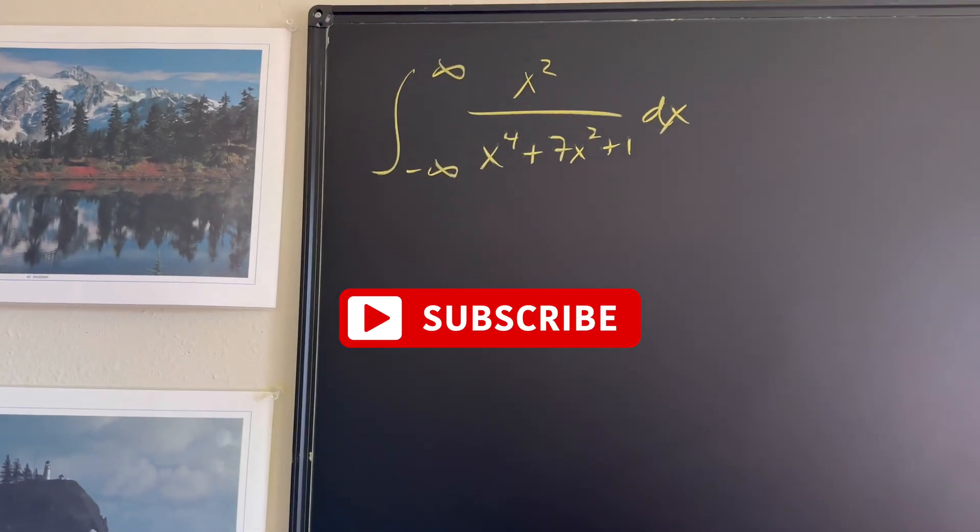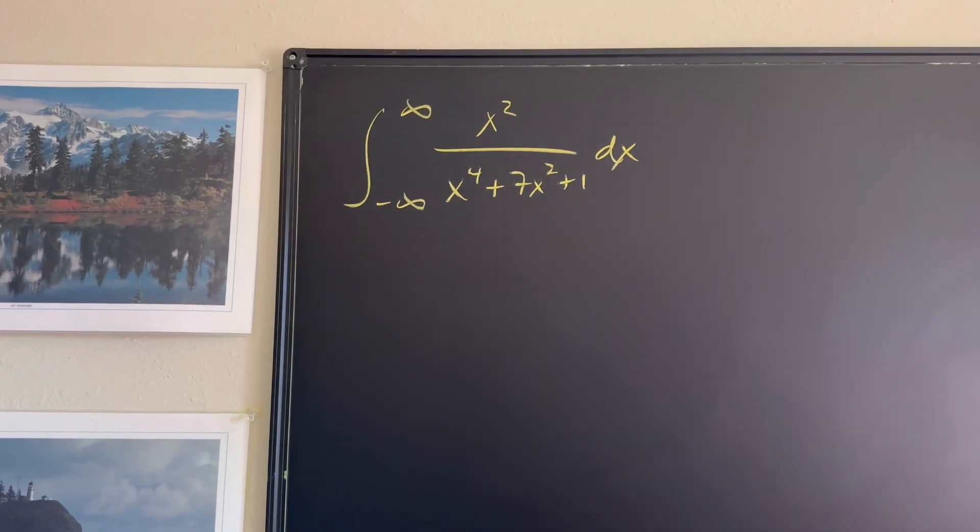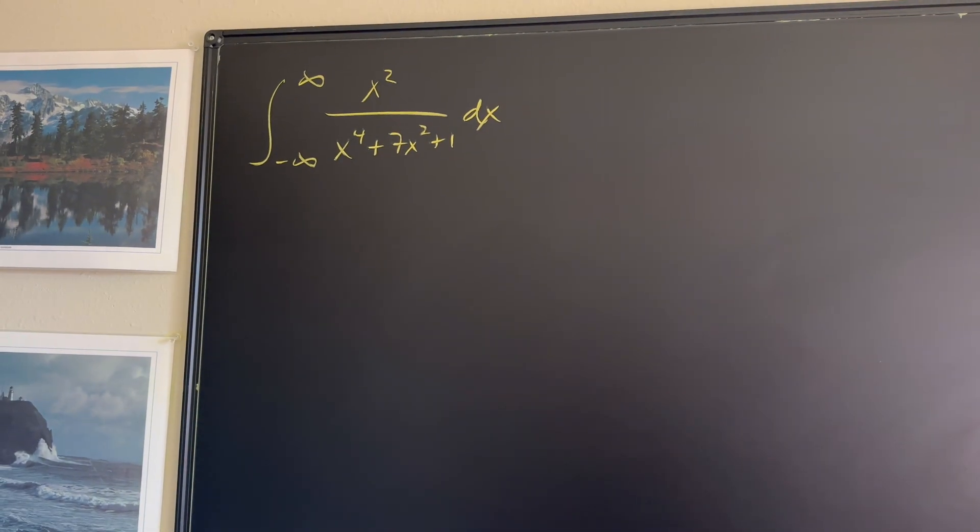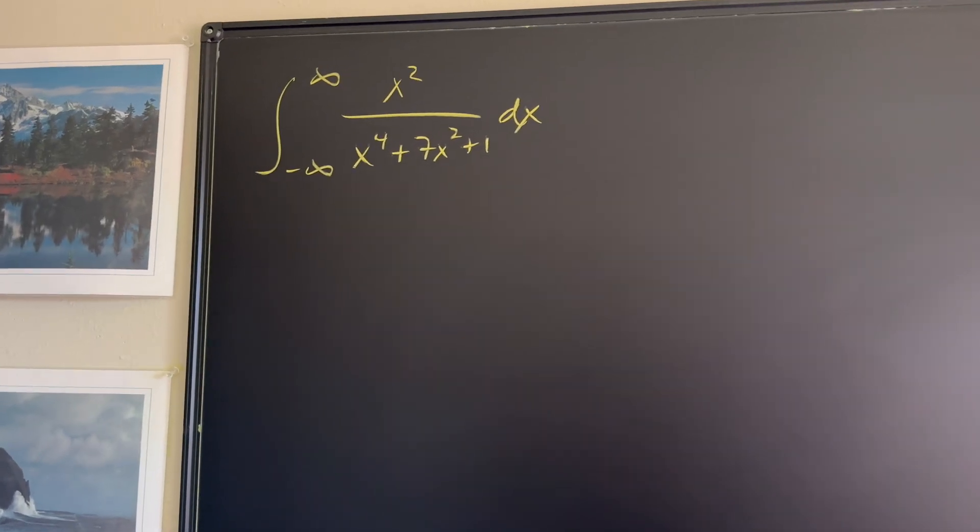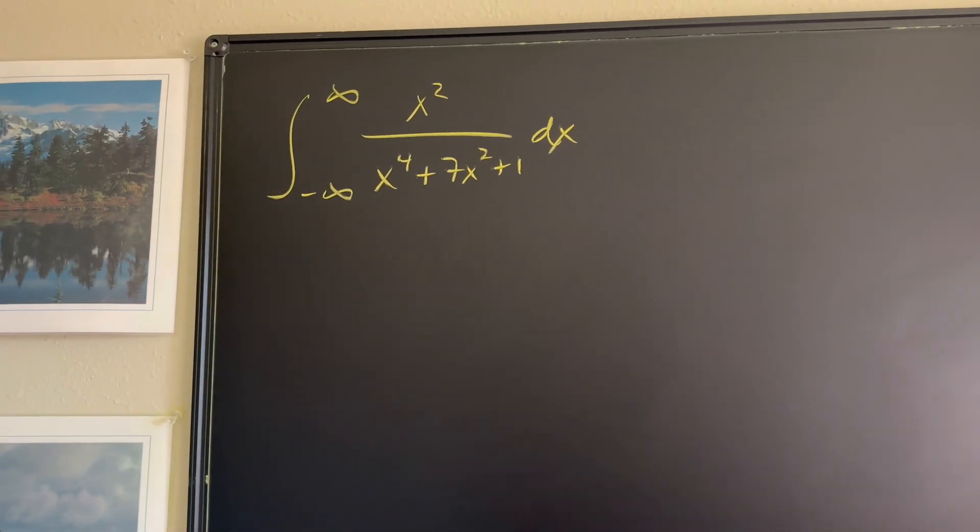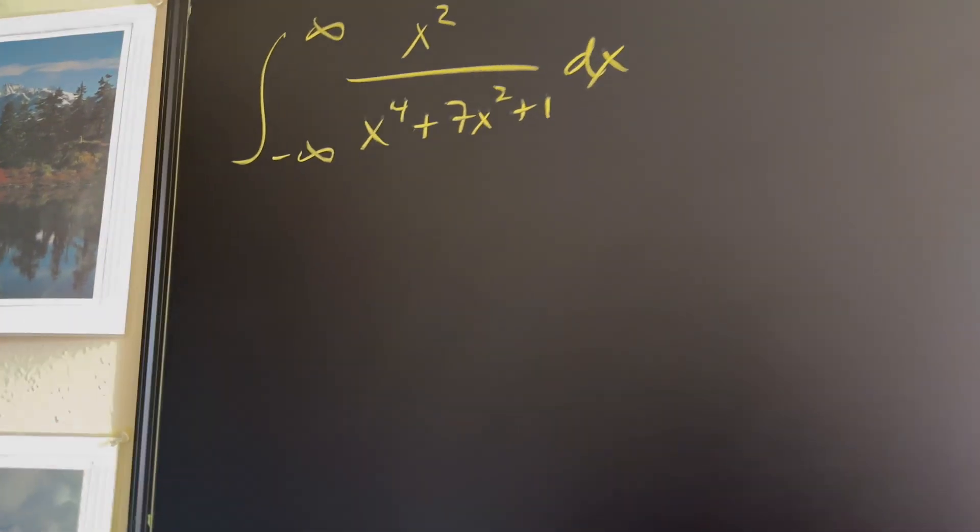So here's the integral that we're going to solve today. We have the integral from negative pi to pi of x squared over x to the fourth plus seven x squared plus one. Now, it might look a little intimidating, but Glaser's Theorem really helps us understand and find the solution of this fairly easily. So let me go ahead and show you.